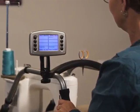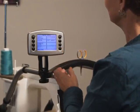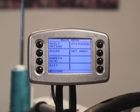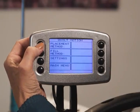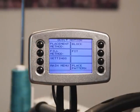This brings you back to the main screen on the display showing the following options. The quilt motion button will display your placement and fill methods along with the settings, main menu, and place pattern buttons.